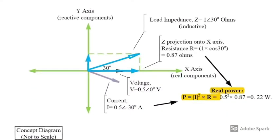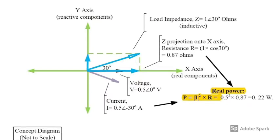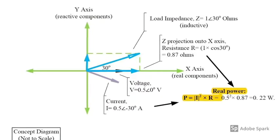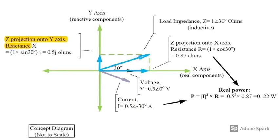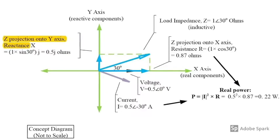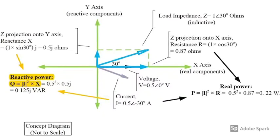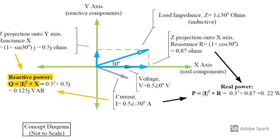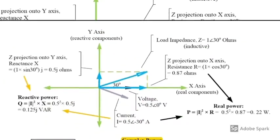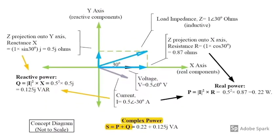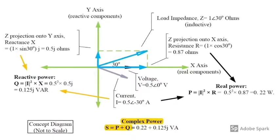For the AC circuit, real power is still current magnitude squared times resistance. When the impedance is projected onto the vertical axis, we get reactance X. Reactive power Q is equal to current magnitude squared times reactance. The AC circuit complex power S is equal to P plus Q.